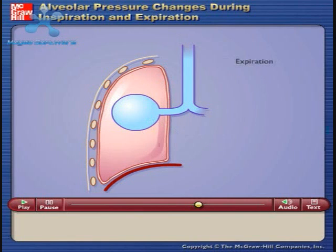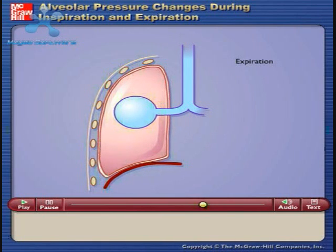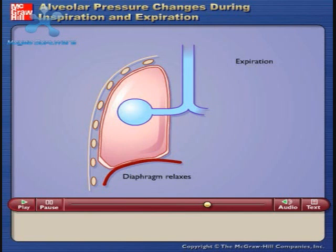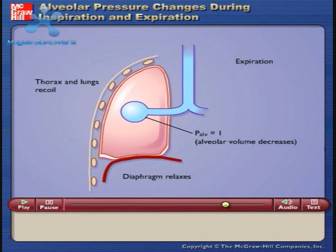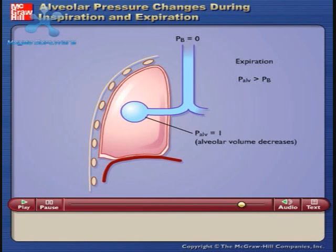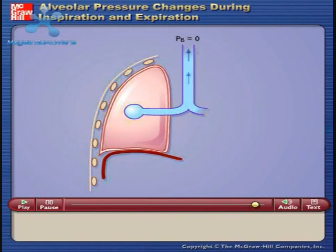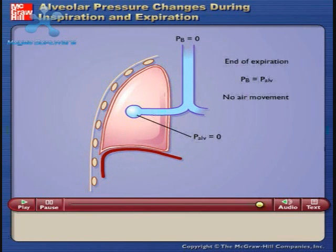During expiration, the volume of the thorax decreases as the diaphragm relaxes and the thorax and lungs recoil. This results in a decrease in alveolar volume and an increase in alveolar pressure. Since the alveolar pressure is now greater than barometric air pressure, air flows out of the lungs. Air continues to flow out of the lungs until alveolar pressure becomes equal to barometric pressure.